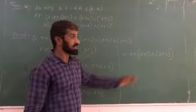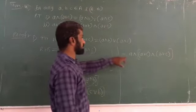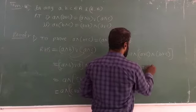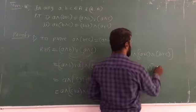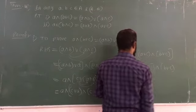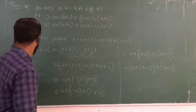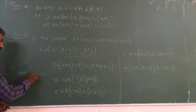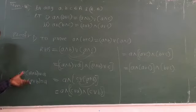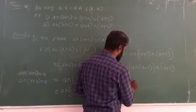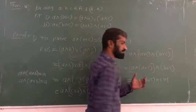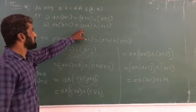So right now B joint C. Using the theorem: A meet A is equal to A, then A meet A joint B is equal to A, then A meet A joint B is equal to A meet B. By using this theorem I can write this A mean B joint C, so that is equal to LHS. Hence LHS is equal to RHS.